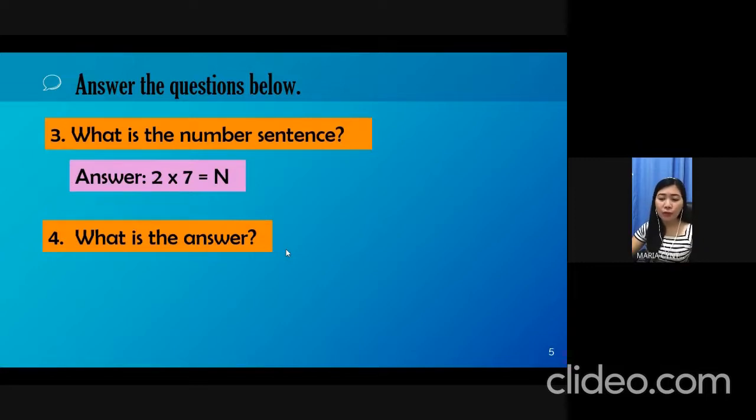In solving for the answer, we can solve it in two ways. First, we can double the number. Let's say 2 times 7 is the same thing as 7 plus 7, and the product is 14.